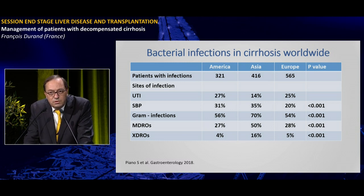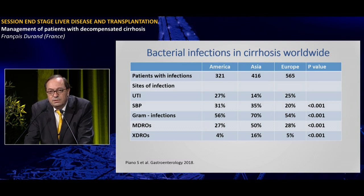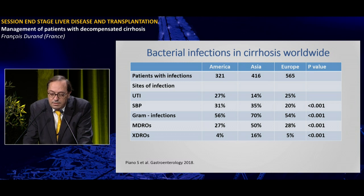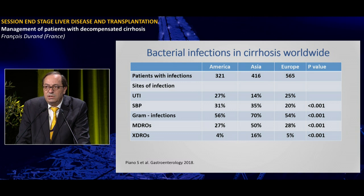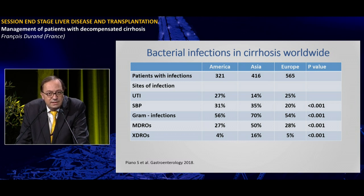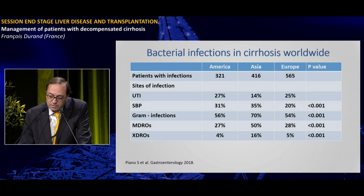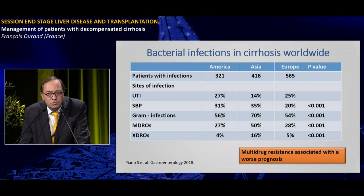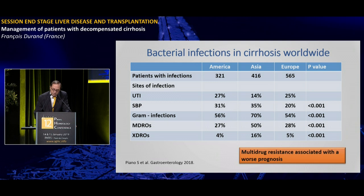A very recent study promoted by the International Club of Ascites with Salvatore Piano explored the distribution of infections in North and South America, Asia, and Europe. The most common infections were urinary tract infections and spontaneous bacterial peritonitis. Gram-negative infections were more common in Asia, as were multidrug-resistant infections and extended-spectrum infections. In this cohort, multidrug-resistant infections were also associated with worse prognosis.